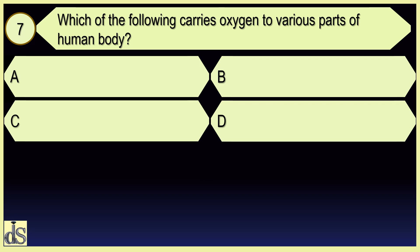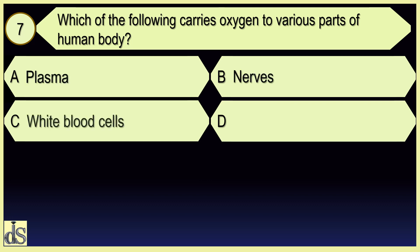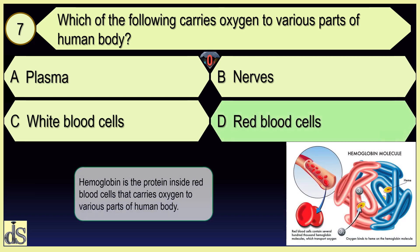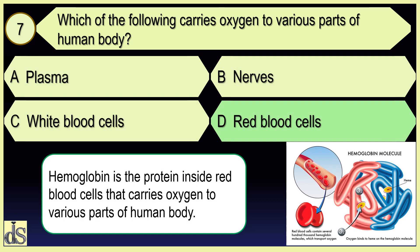Which of the following carries oxygen to various parts of the human body? Red blood cells.